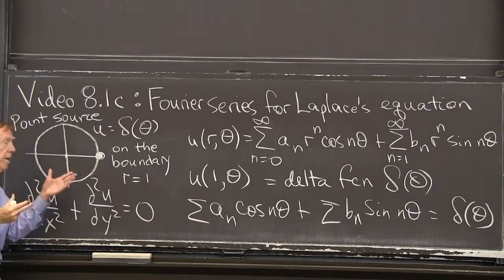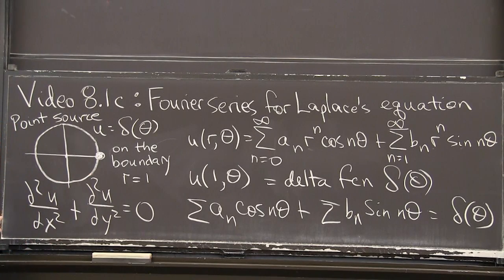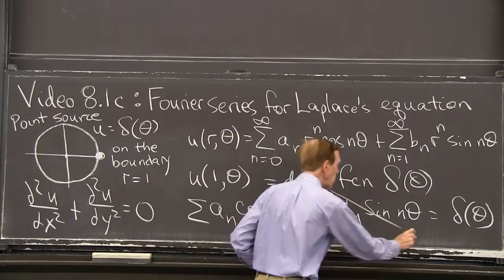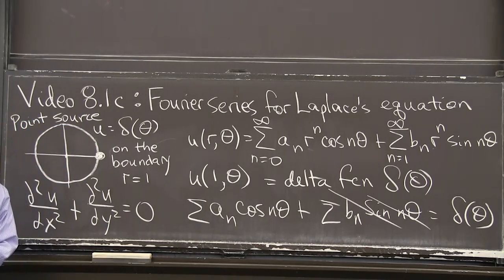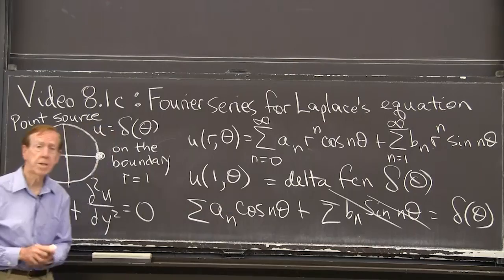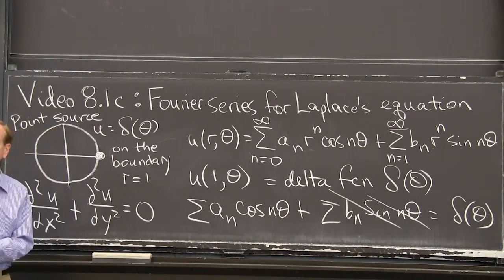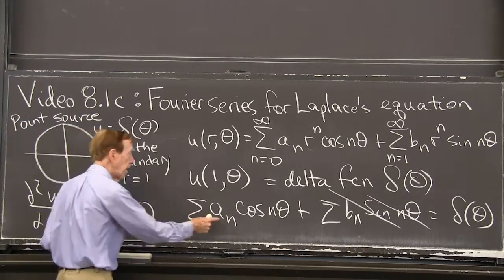So changing theta to minus theta still leaves me the spike at 0. So because it's an even function, I won't see any sines. I won't see any odd functions, the sine theta. And I have an easy time to find the coefficients a_n of the cosines. Actually, we did that directly from the formula for the a_n.